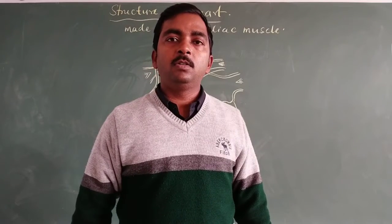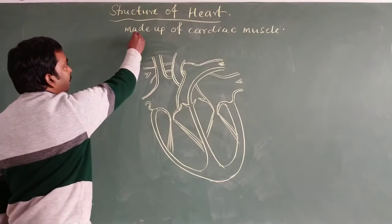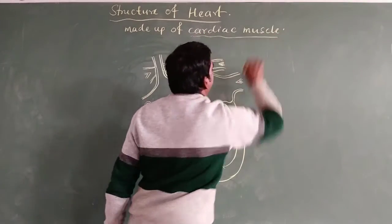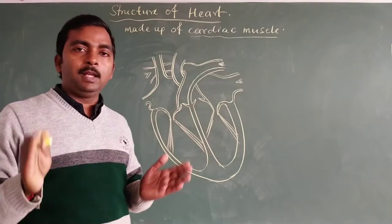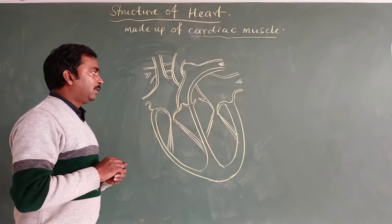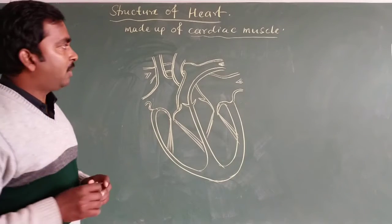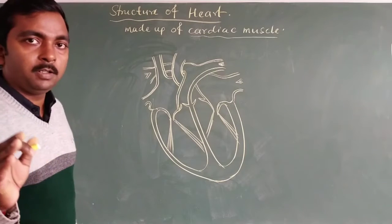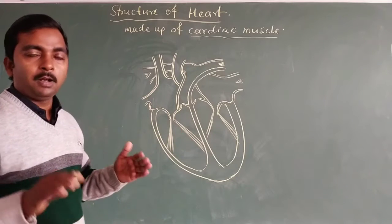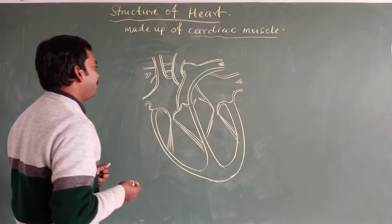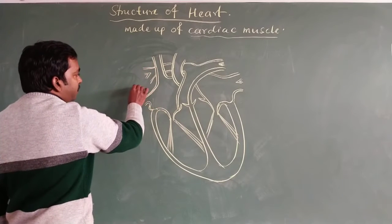We are going to discuss the structure of the heart. The heart is made up of cardiac muscles — only cardiac muscles are within the wall of the heart. That wall is arranged to make different chambers of the heart. Let us start discussing the different parts and structures associated with the heart. Blood is collected into the heart into a chamber.